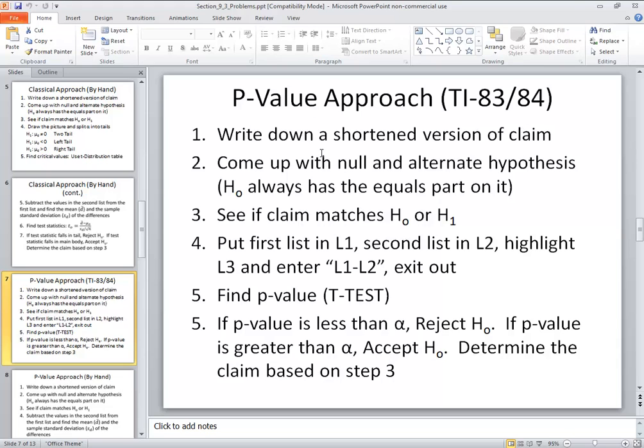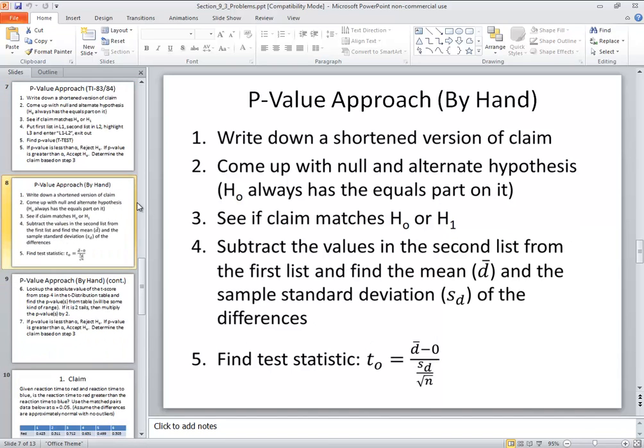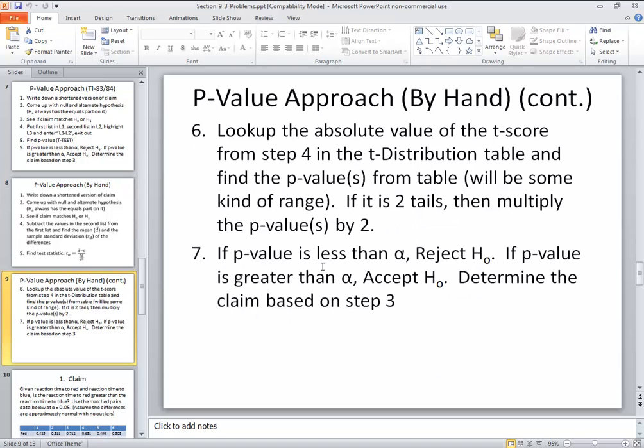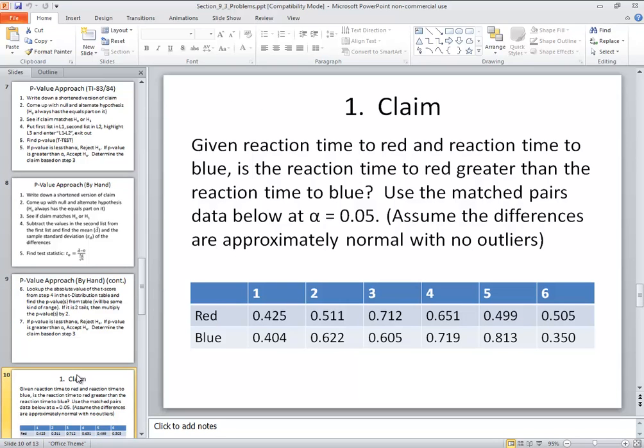P-value approach. Write down a shortened version of the claim. Come up with a null and alternate hypothesis. H naught always has equals part on it. See if a claim matches H naught or H1. Put the first list in L1, second list in L2. Highlight L3 and enter L1 minus L2 and exit out. Then find the p-value using the t-test. If p-value is less than alpha, reject H naught. If p-value is greater than alpha, accept H naught. Determine the claim based on step three. Now use the word accept. Most books do not use the word accept. They use do not reject. Accept is a really strong statement. Do not reject says that we don't reject it, but we don't necessarily accept it 100% either. Just we do not reject it.